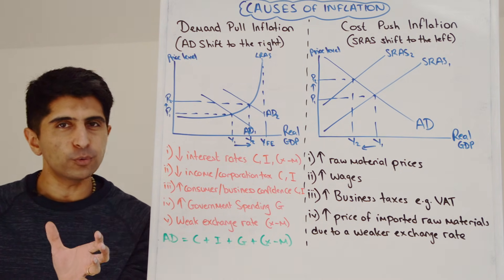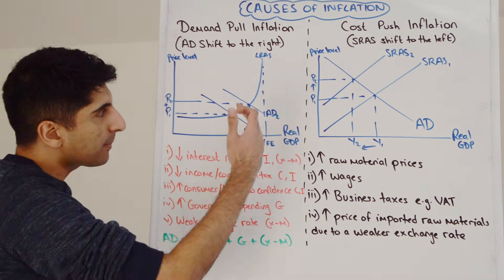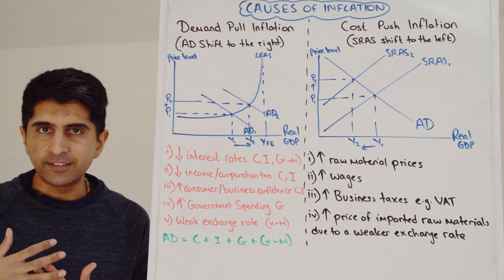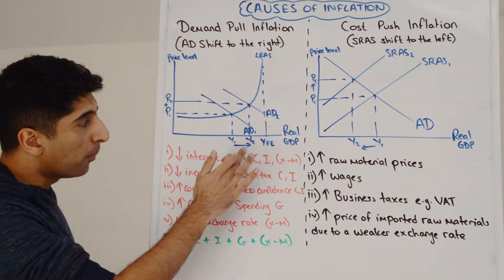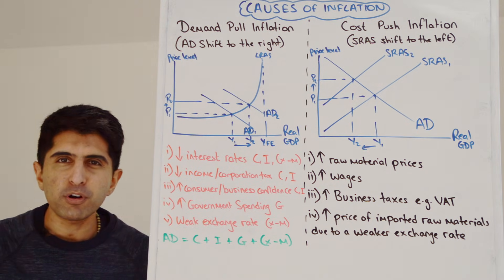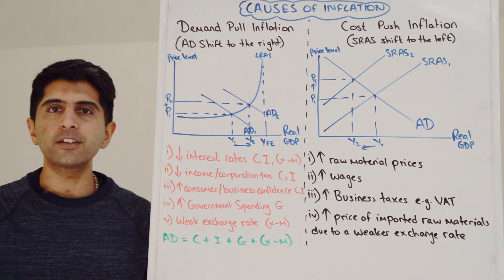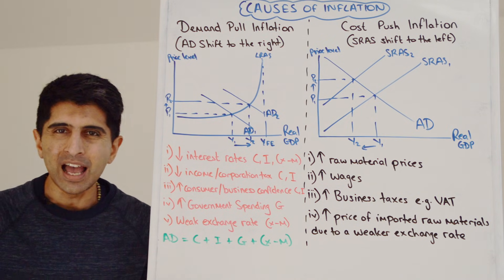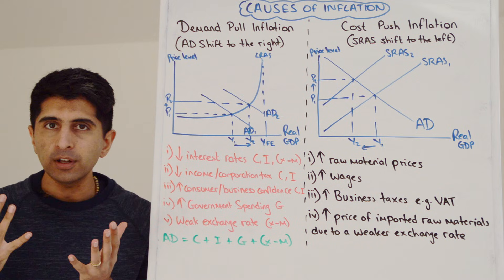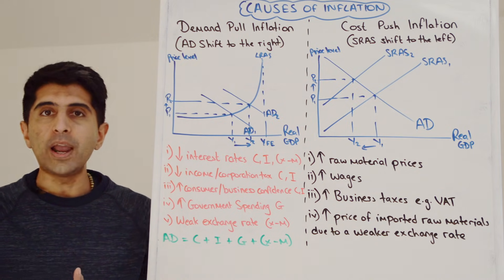But why does this occur? When aggregate demand shifts to the right, we can see that there is greater pressure on existing factors of production to produce more output. More output is being made, and we're getting closer to YFE. So more pressure is being put on existing factors of production — they are becoming scarcer. And what happens when more pressure is put on a scarce resource? It goes up in price.